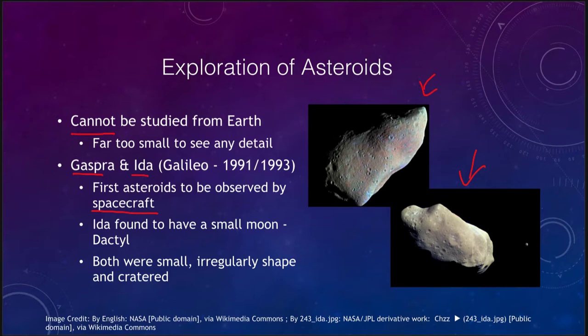We can see that these asteroids are very irregularly shaped — unlike moons or planets, which are always spherical because they were large enough. Now we're actually looking at small objects that are not big enough to pull themselves into a sphere. In fact, Ida actually has a moon of its own, a very small object — perhaps material impacted off of it that was never able to break orbit, so it remains orbiting. These asteroids are small, irregularly shaped, and heavily cratered, with no geological activity going on.